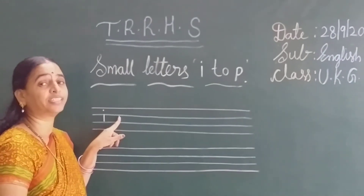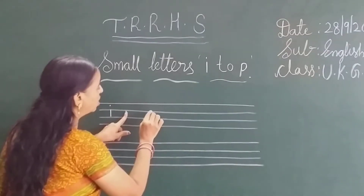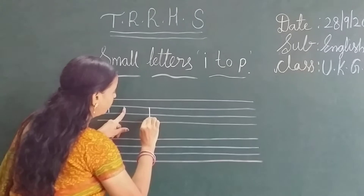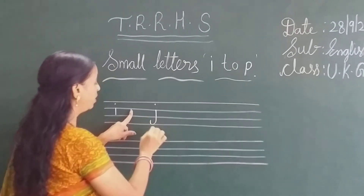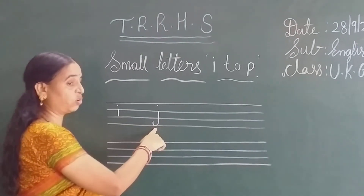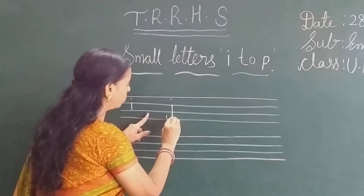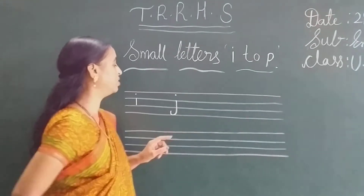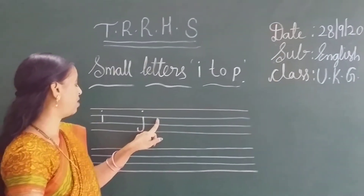After J. Small J, we have to write. Small J — we have to touch the downgrade line. Small J. Ok children? Small J. Again give the finger gap.